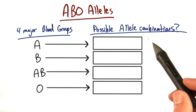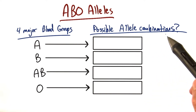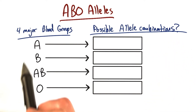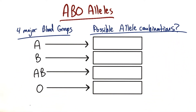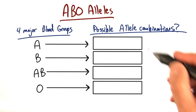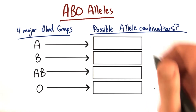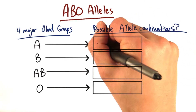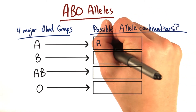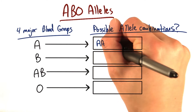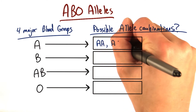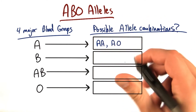I want you to tell me what the possible allele combinations are for each of these different blood type groups. I'll help you out with the first one and give you an example. To be blood type A, we could have two A alleles, or we could have an A allele and an O allele.